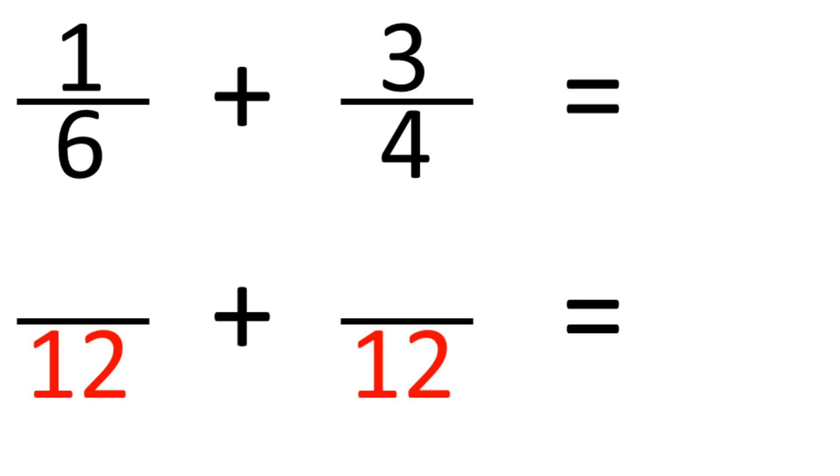Now if you or your child are ever unsure how to find a common denominator, a simple way is just to multiply the two denominators together, as this guarantees that the resultant denominator will be a multiple of both. So in this case, it's just 6 times 4 is 24.